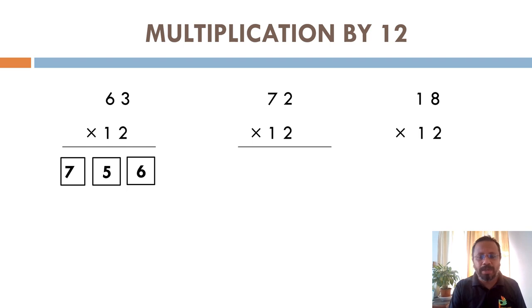Now 72 times 12. So double of 2 is 4. Now double of 7 is 14 plus back digit 2. 14 plus 2 is 16 carry-over 1. I will add this carry-over to 7 to get 8. So our final answer will be 864.